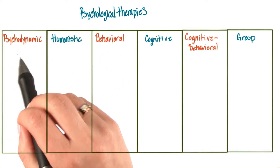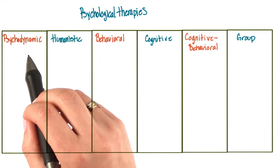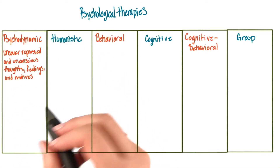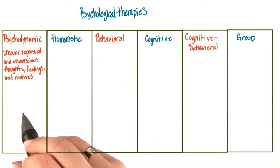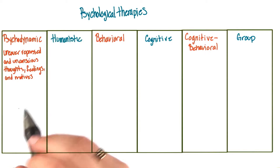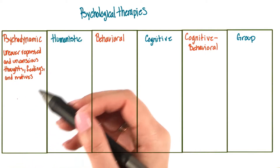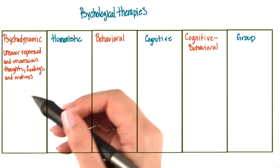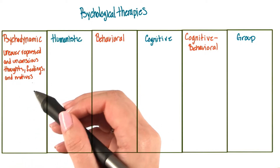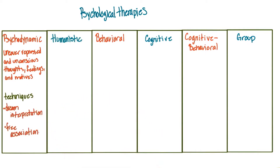Let's first start with psychodynamic therapy. The goal of psychodynamic therapy is to uncover the repressed or unconscious thoughts, feelings, and motives one has. The techniques of psychodynamic therapy are things like dream interpretation and free association.